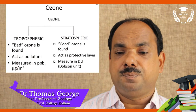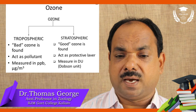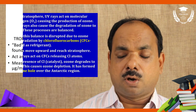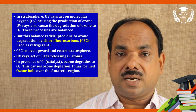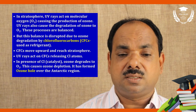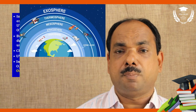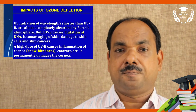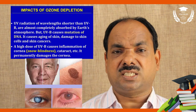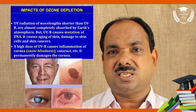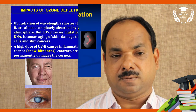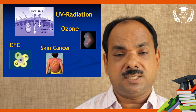Bad ozone is in the troposphere, good ozone is in the stratosphere. Chlorofluorocarbons release free radicals that create big problems for the ozone umbrella. If ozone holes happen in the stratosphere, UV light falls through — causing blindness, cataract, if it falls on the skin.